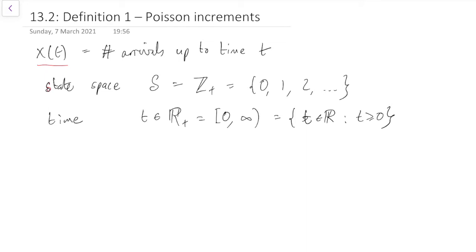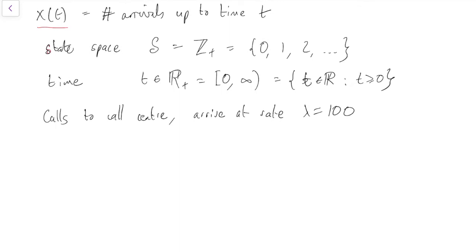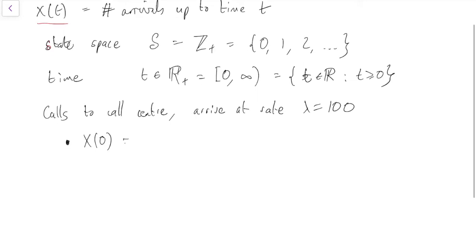In order to think about what properties we might want it to have, let's have a specific example in mind. Let's say calls to a call centre, and let's suppose they arrive at a rate lambda, and let's just say that's 100 for the purposes of this example. What properties might we want this process X(t) to have? It seems like when we start counting, that will be X(0), and there won't have been any calls arrive yet at time 0. So that should be X(0) equals 0. That's one property that we'll want this to have.